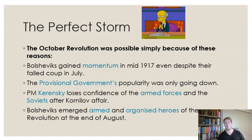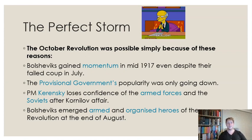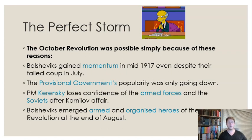In 1917, the Bolsheviks had been gaining momentum and recovering from their July Days failed coup. The provisional government had been declining in popularity since its inception — they were never elected, always second to the Petrograd Soviet. The Prime Minister continued to lose popularity after his failed manipulation of the Kornilov affair. Meanwhile, the Bolsheviks emerged from those affairs largely organised, having the arms they needed, and looking like the heroes that the revolution really needed — ready to make the lasting change that everyone was holding their breath for.